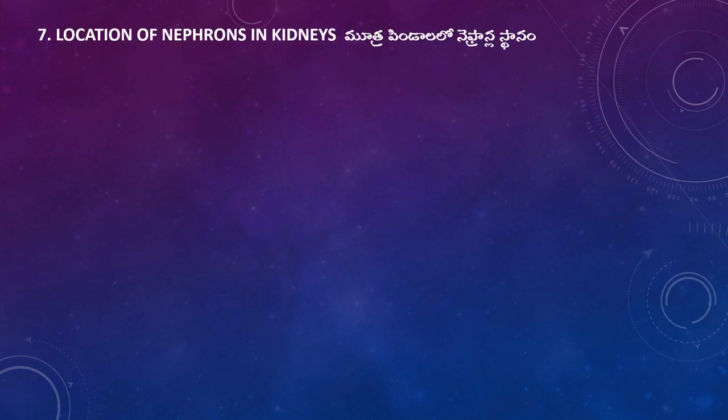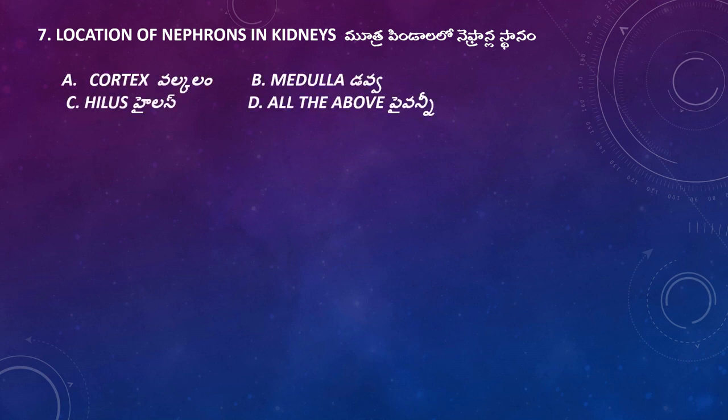Question: What is the location of nephrons in kidneys? Options: Cortex, Medulla, Hilus, All of the above. The right answer is Medulla. Though nephrons start from the cortex, most of the part of the nephron is spread through the medulla, so the right answer is Medulla.